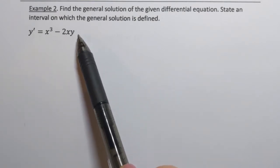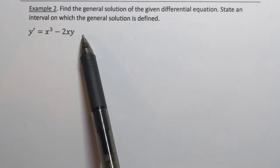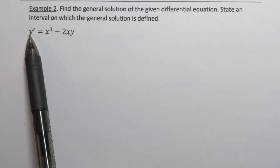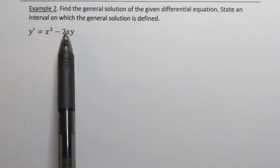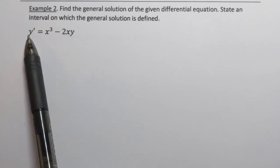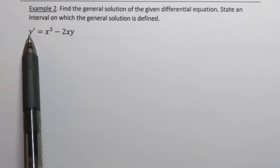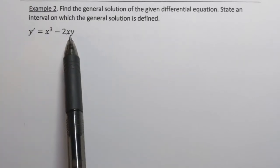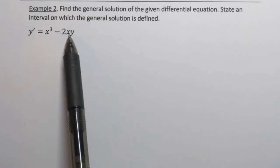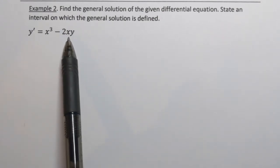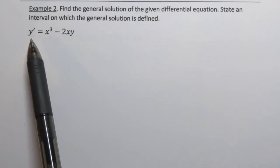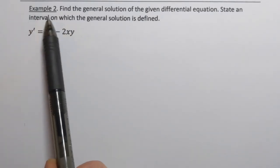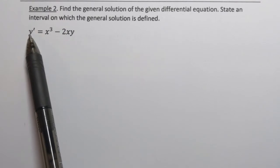Let's start by observing that we're looking at a linear differential equation. We can see how y and its derivative are raised to the first power. The coefficient in front of the first derivative is one, and in front of y we have negative 2x, so the coefficients are functions of x.